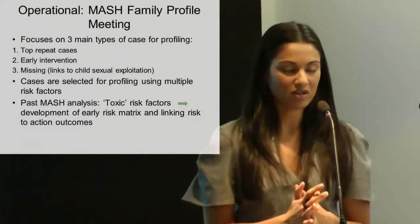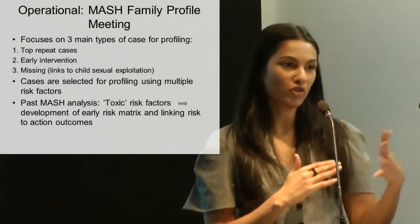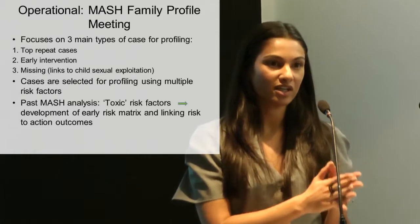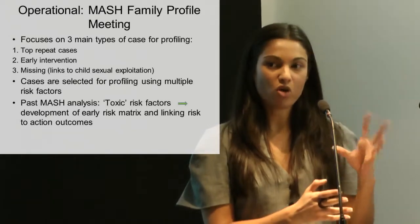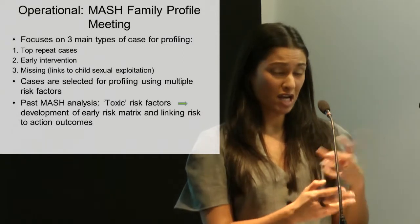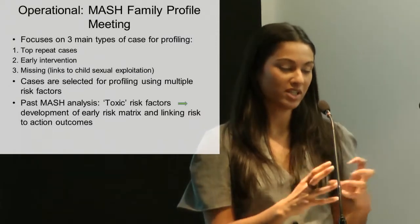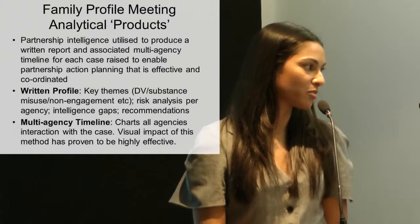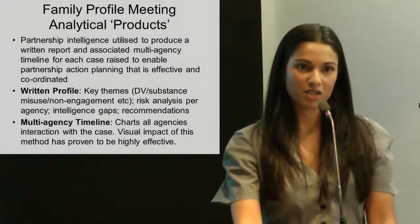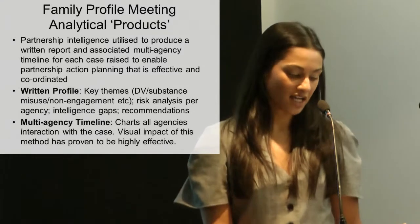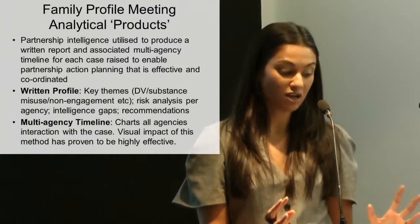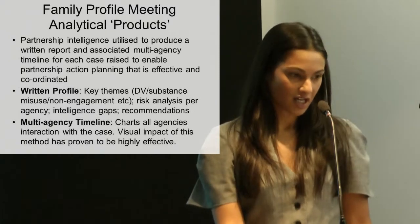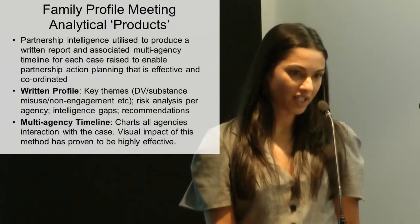There's been a whole load of research done about domestic abuse, so we know what kind of factors might make a family more vulnerable to domestic abuse, and that's where we really need to be looking and targeting. We need to look at what combination of those early indicators and how to weight those factors to identify which families are most at risk of future harm. Within the MASH family profile meeting, we've utilised partnership intelligence by providing a written profile and we break it down into key themes.